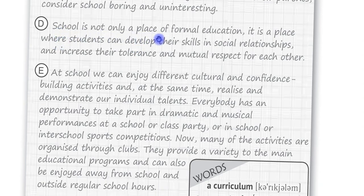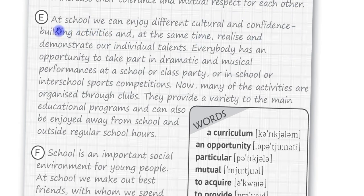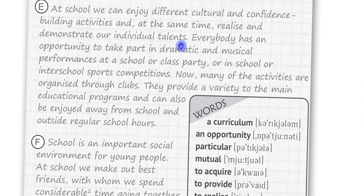School is not only a place of formal education. It is a place where students can develop their skills in social relationships and increase their tolerance and mutual respect for each other. At school, we can enjoy different cultural and confidence-building activities and, at the same time, realize and demonstrate our individual talents.